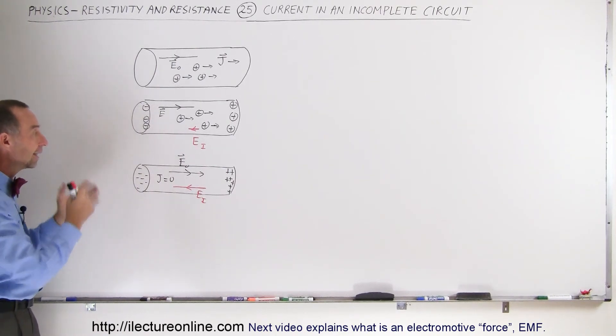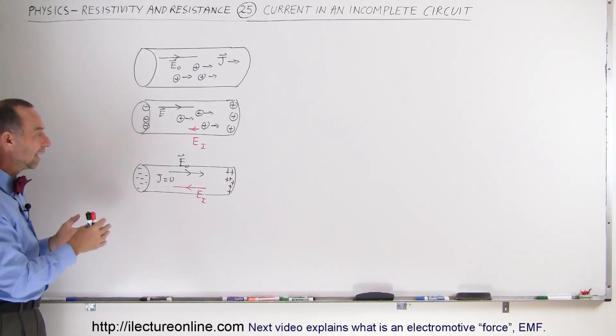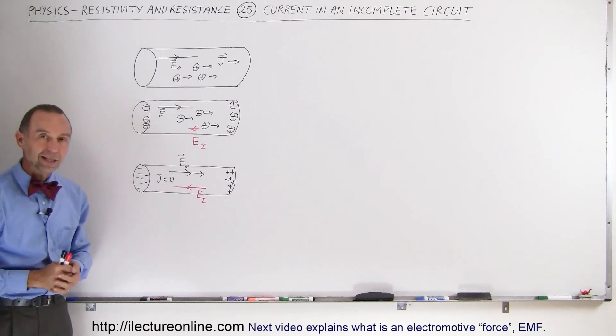That will be the end state until we make some changes to the circuit. So that's what happens with the current flowing in an incomplete circuit.